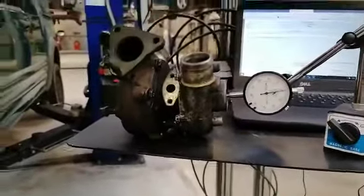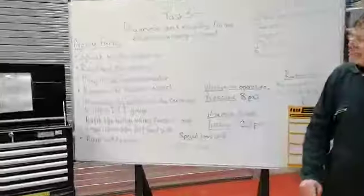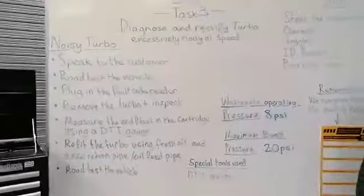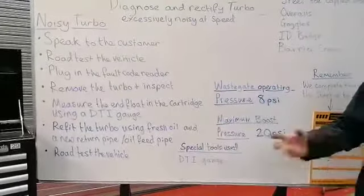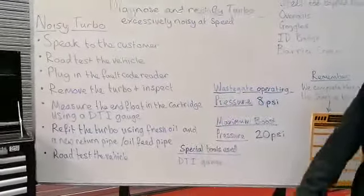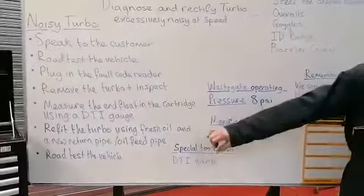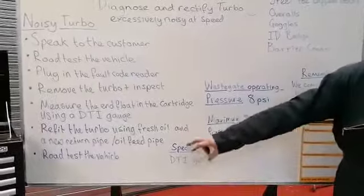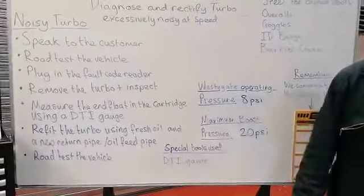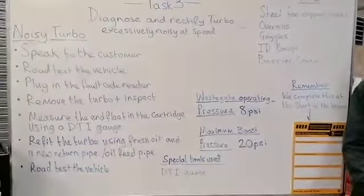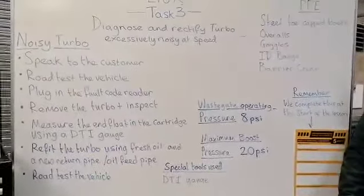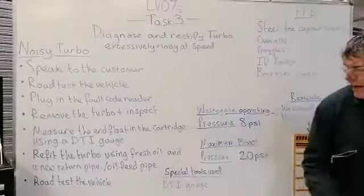So going back over to my board, we've used the DTI gauge to measure the end floats in the cartridge. And we're going to refit the new turbo — the reconditioned part — using fresh oil and a new return pipe and a new oil feed pipe. Once all that's done and we're happy that the vehicle is safe and ready, we're going to road test that.